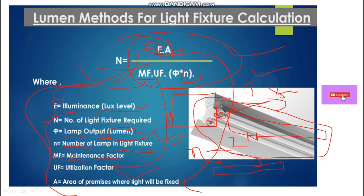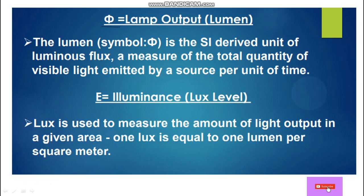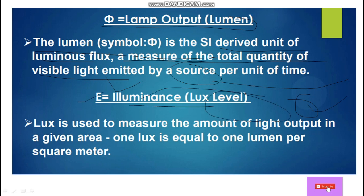Phi (Φ) means lamp output in lumens — the lumen is the SI derived unit of luminous flux, the total quantity of visible light emitted by the light fixture per unit time. E is the illuminance — lux level. For different areas, we have different lux levels. One lux is equal to one lumen per square meter.